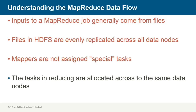In this way, each mapper is generic and can process any file. Each mapper takes the files to be mapped, saves them locally, and processes them. After the mapping phase is completed, the mapped key-value pairs must be exchanged between data nodes so as to send to a single reducer. The tasks in reducing are allocated across the same data nodes on the Hadoop cluster. This exchange is the only time data nodes communicate with each other.